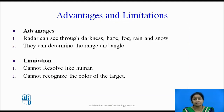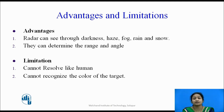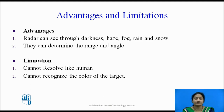What are the advantages and limitations? The advantages of using the radar system are: the radar can see through darkness, haze, fog, rain, and snow. As the electromagnetic waves are in the gigahertz frequency, they can transmit over a longer distance and can travel through the different layers of the atmosphere. They can also determine the range and angle of the target, as already discussed.